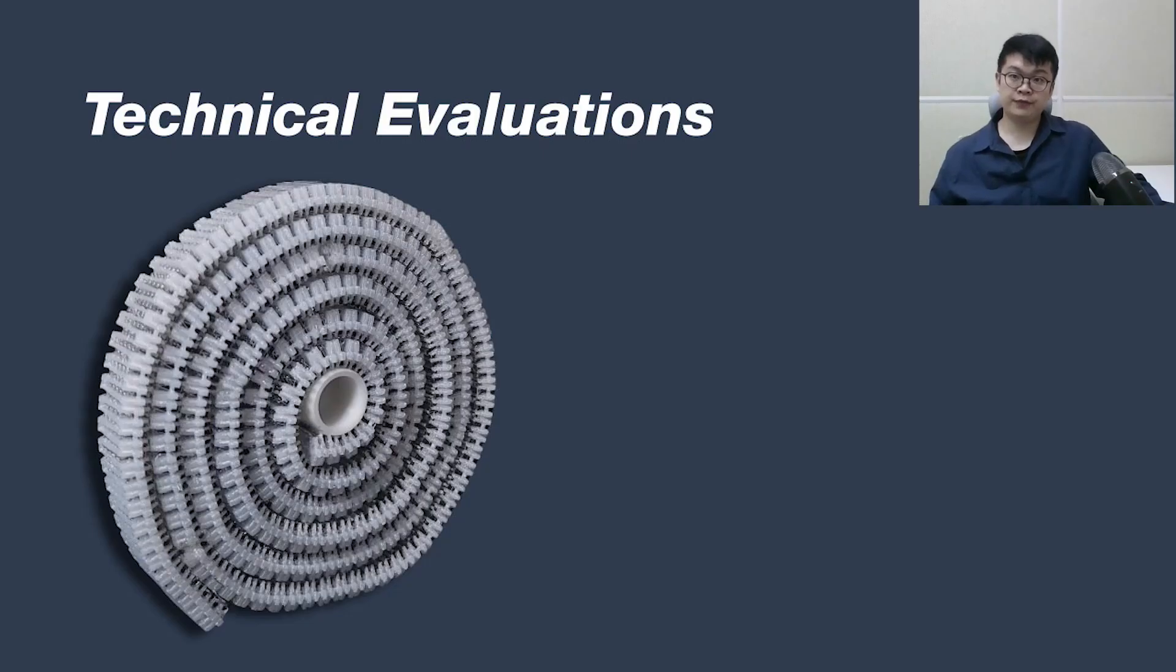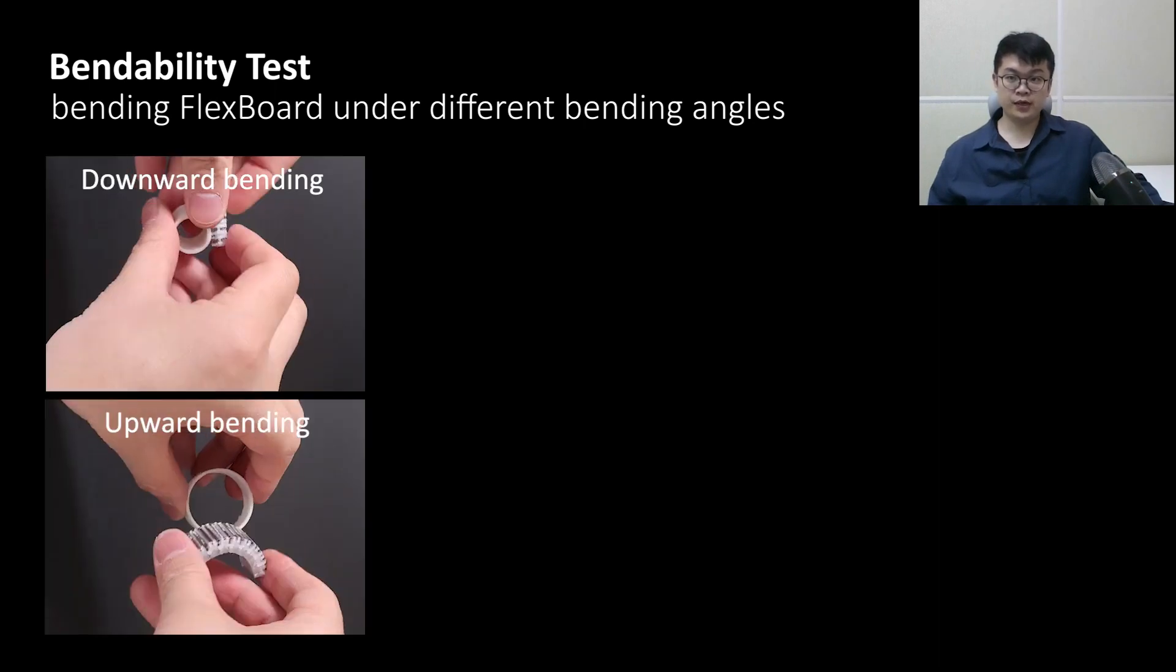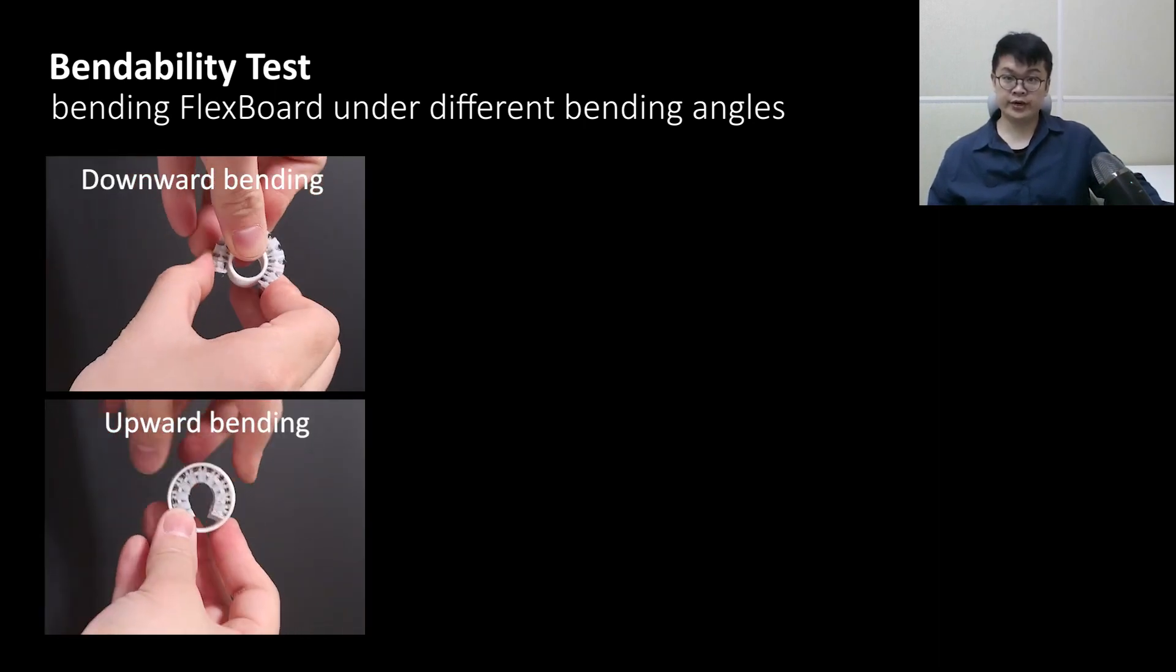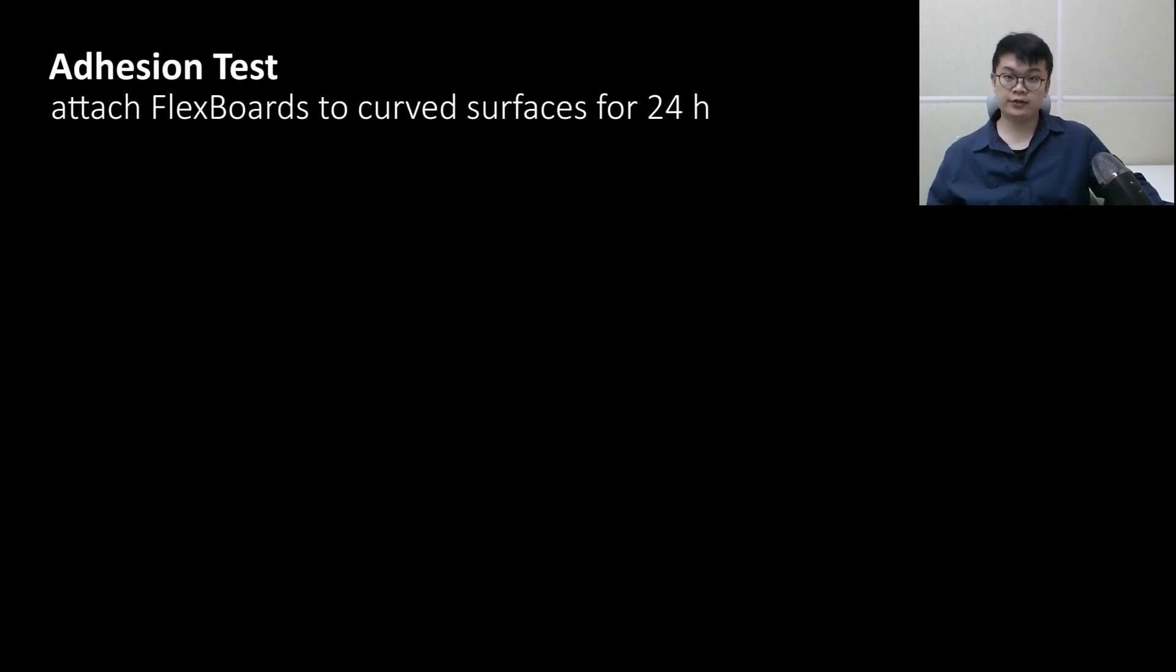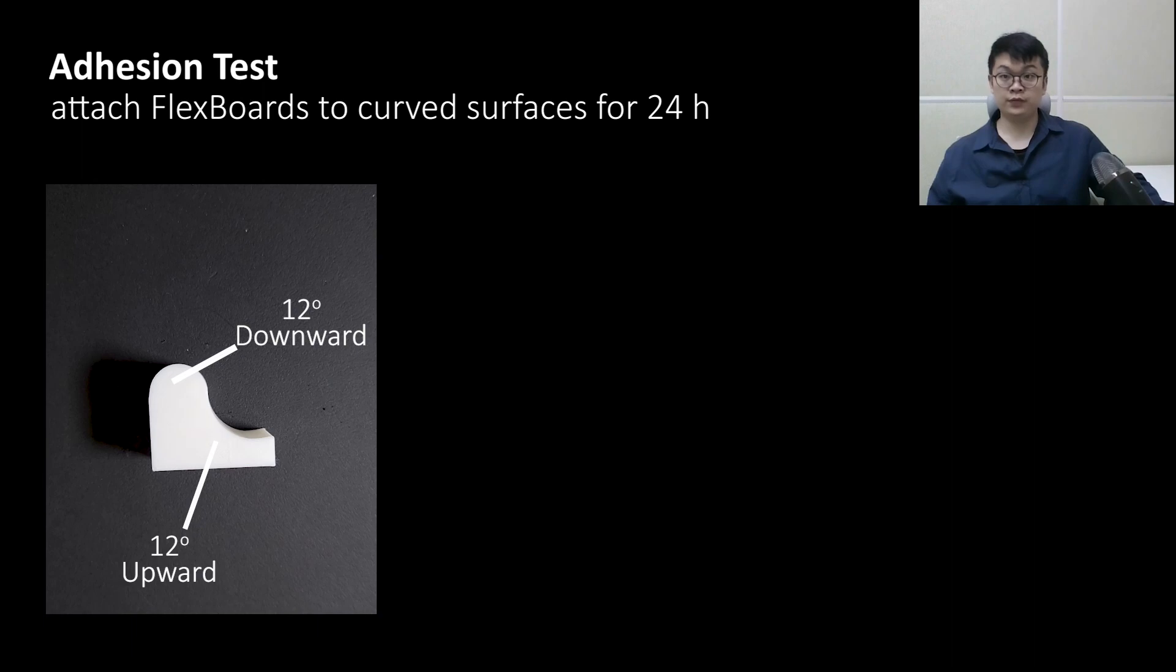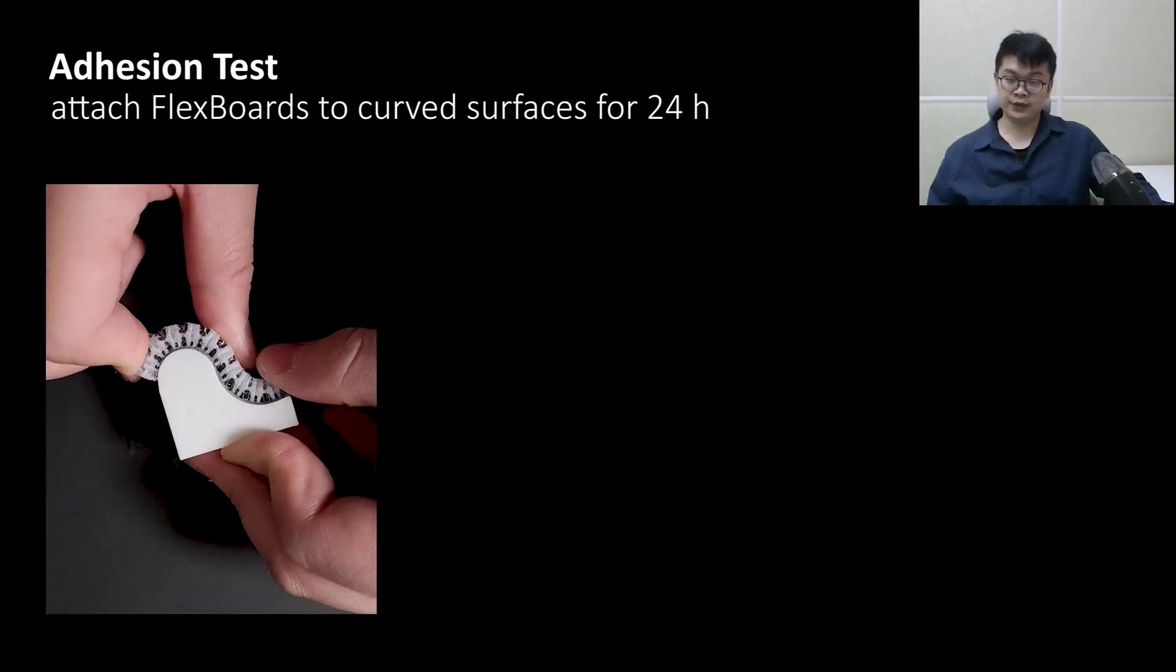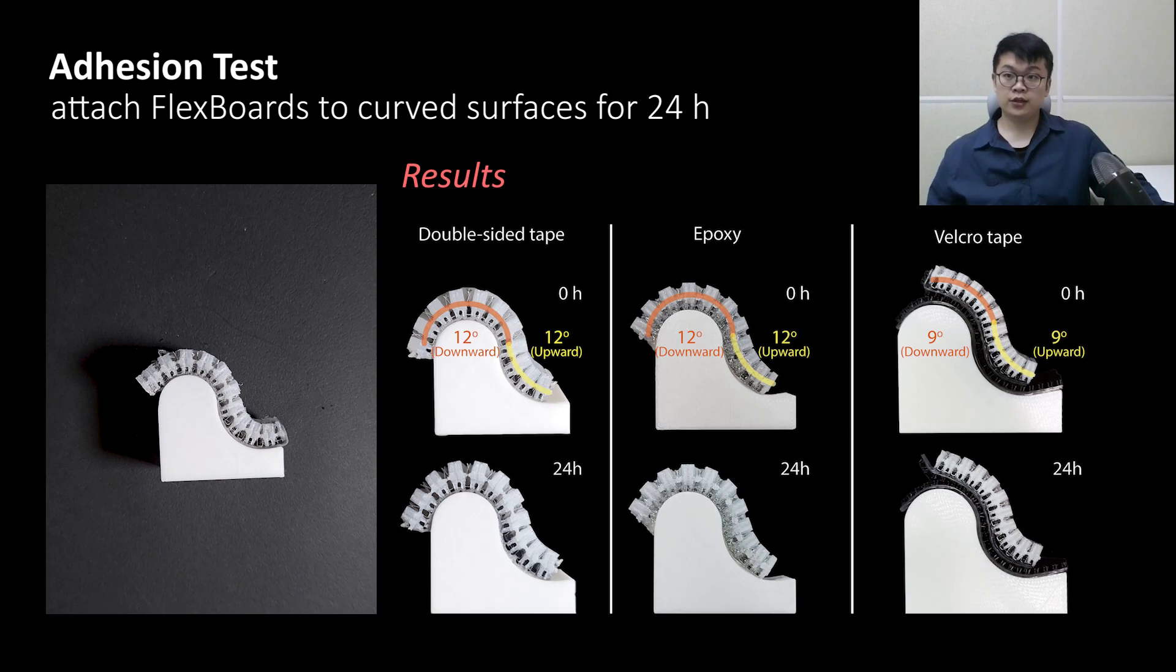FlexBoard has been evaluated in various ways to prove its practical use. Firstly, we evaluated the flexibility of FlexBoard in both upward and downward direction. As previously mentioned, FlexBoard can be bent up to 12 degrees in both directions. Next, we also tested the adherence of the FlexBoard to a curved surface using various adhesives. The results show that double-sided tape, epoxy, and velcro tape provides stable adhesion to a wave curvature for up to 24 hours.